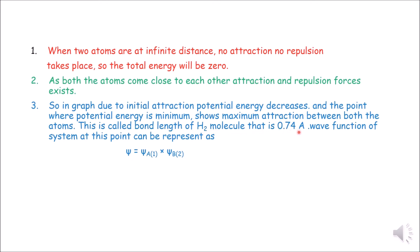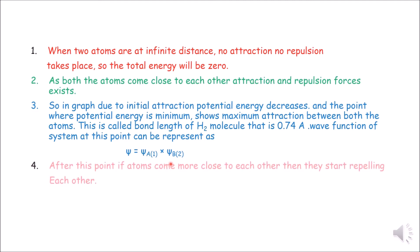At this point, the wave function can be represented as: the total wave function of the H2 Molecule is equal to the wave function of atom A multiplied by the wave function of atom B — it is the product of the wave functions of both atoms. After this point, if atoms come even closer, they start repelling each other, and their potential energy increases.